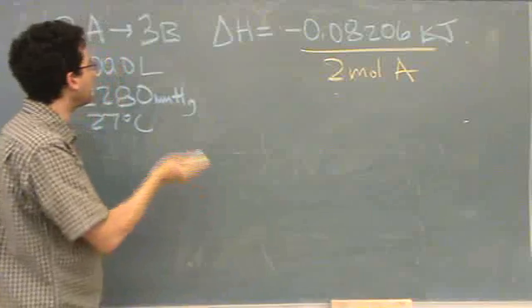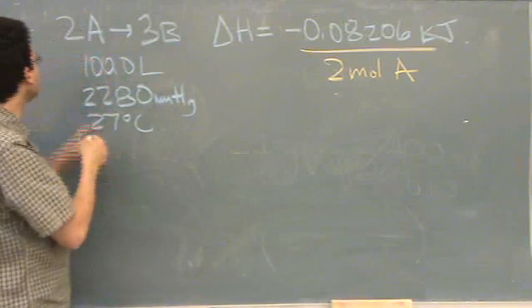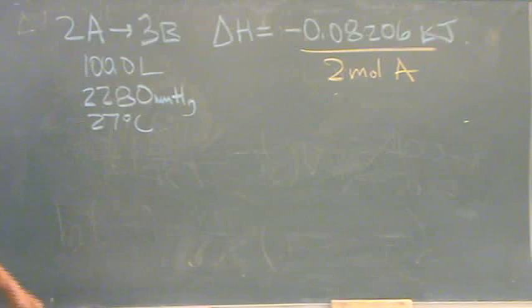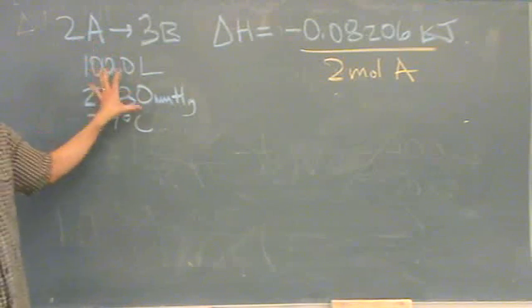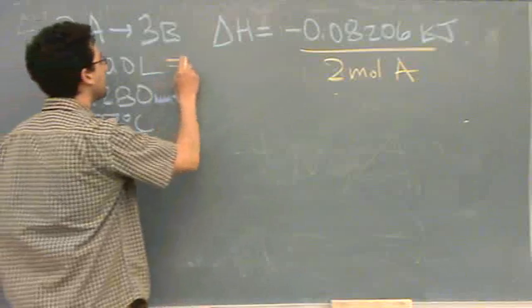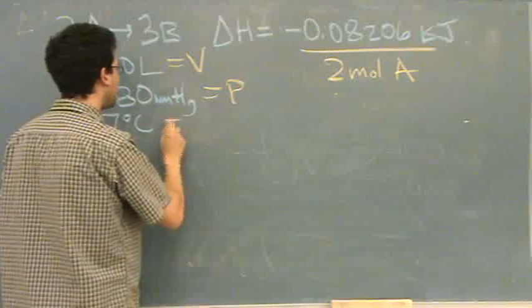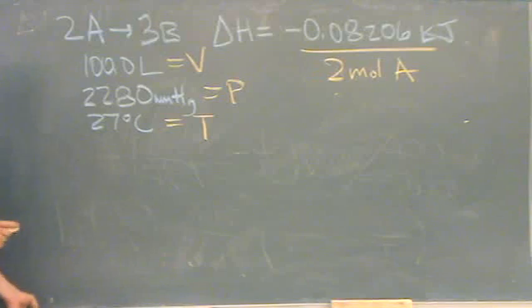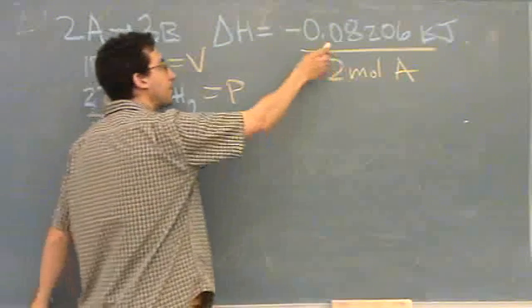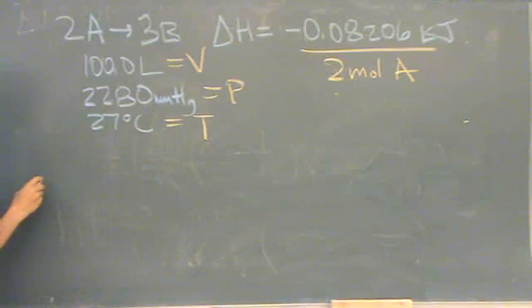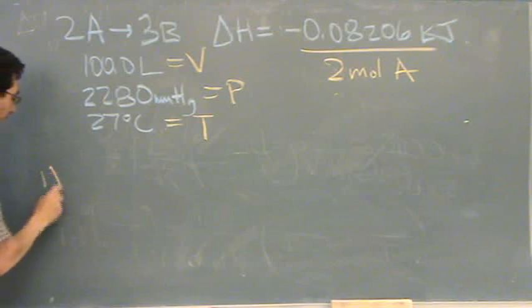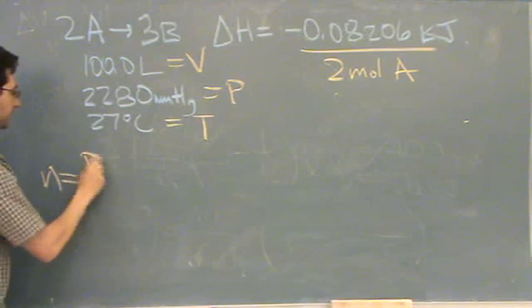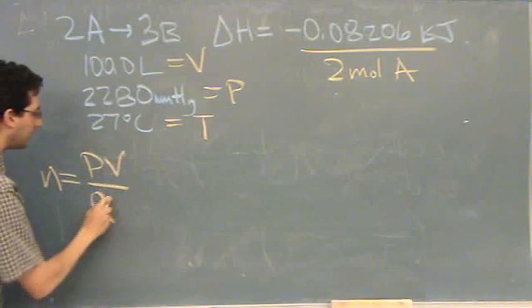You could have put 3 moles of B if you were given information about B, and you just take the coefficient. So now, this is a particular number of moles. I can tell that because I've got volume, I've got pressure, and I've got temperature. So I'm going to use the ideal gas law to find the number of moles and multiply that number by this quantity. I'll just write it out so you can see it.